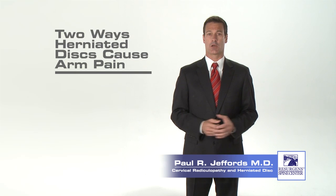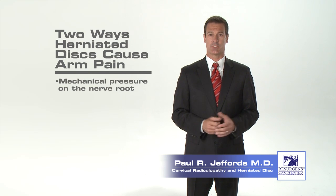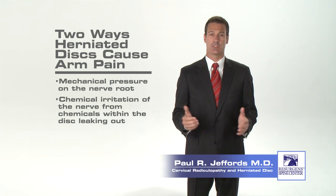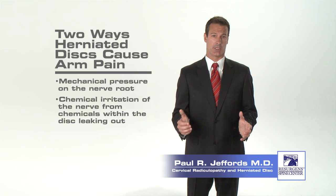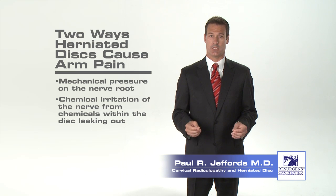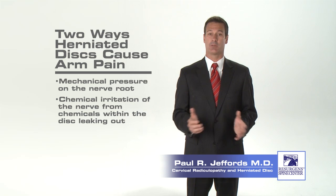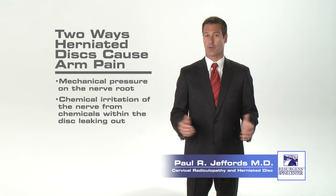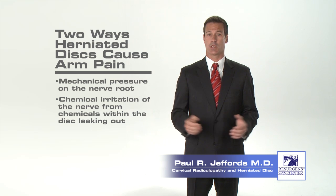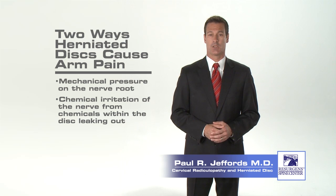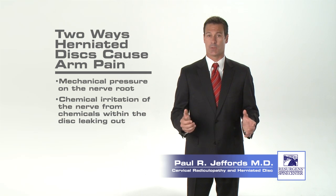A herniated disc can cause arm pain in two ways. First, the material from the nucleus that has ruptured into the spinal canal or foramen can cause mechanical pressure on the spinal nerves. Secondly, the material from the nucleus has chemicals in it that can cause the nerve roots to become very irritated. Both the pressure on the nerve root and the chemical irritation can lead to nerve inflammation and problems with how the nerve root functions, causing pain, weakness, and numbness in the area of the body to which the nerve supplies sensation. Some treatments only affect the chemical irritation, while other treatments can affect both.